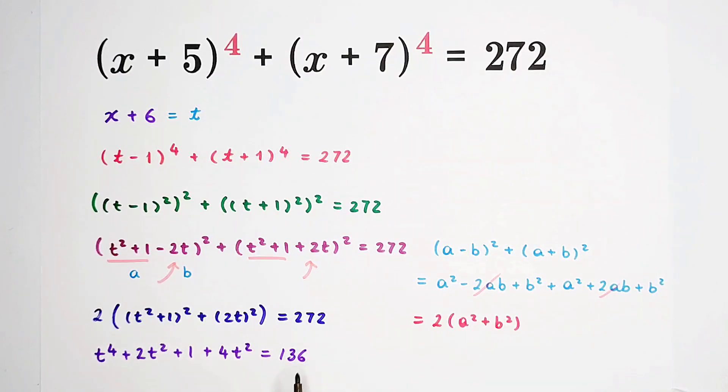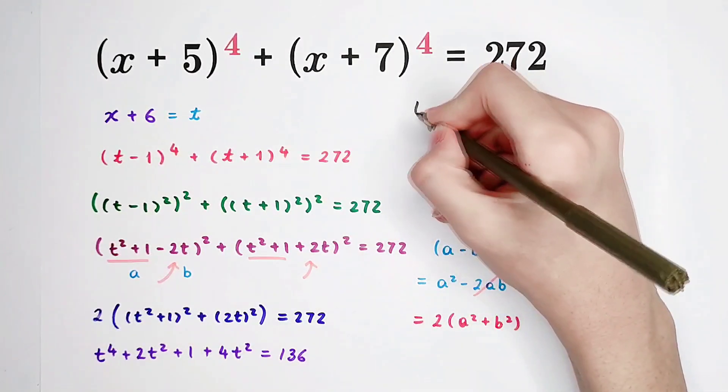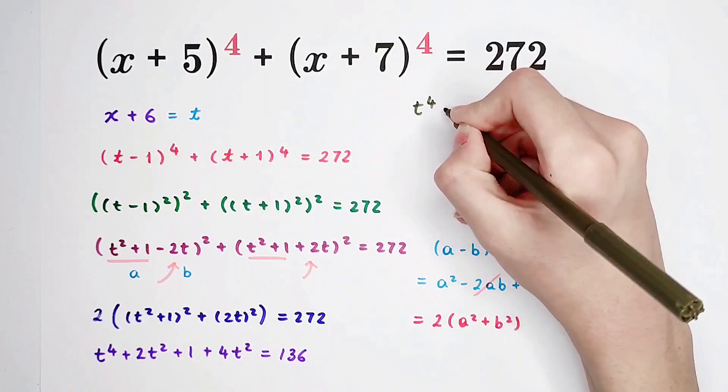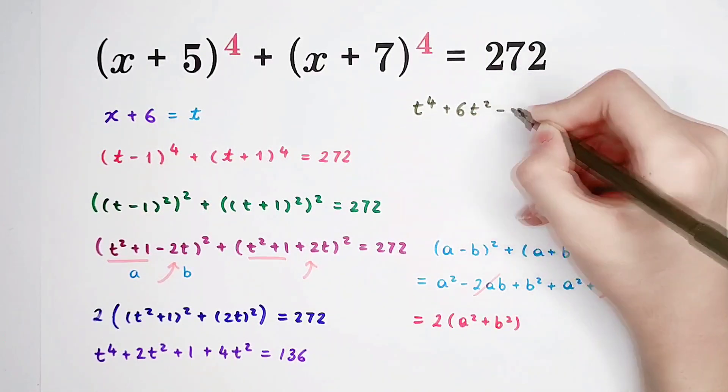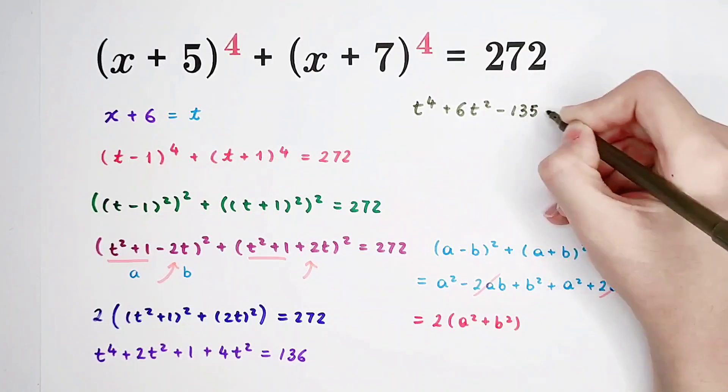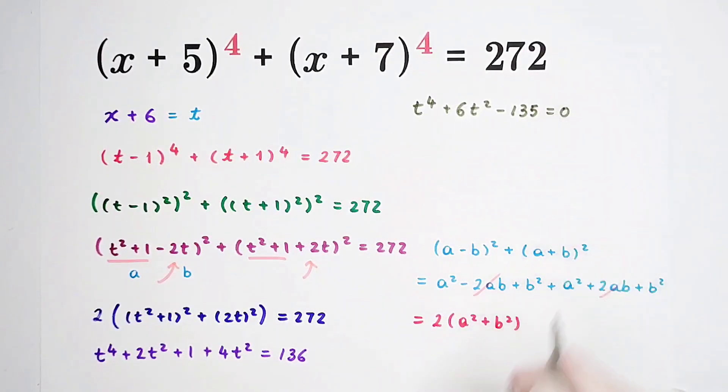So now this equation is an equation about t or t squared. Because t to the power of 4 plus 6t squared minus 135 equals 0. It is actually an equation about t squared.